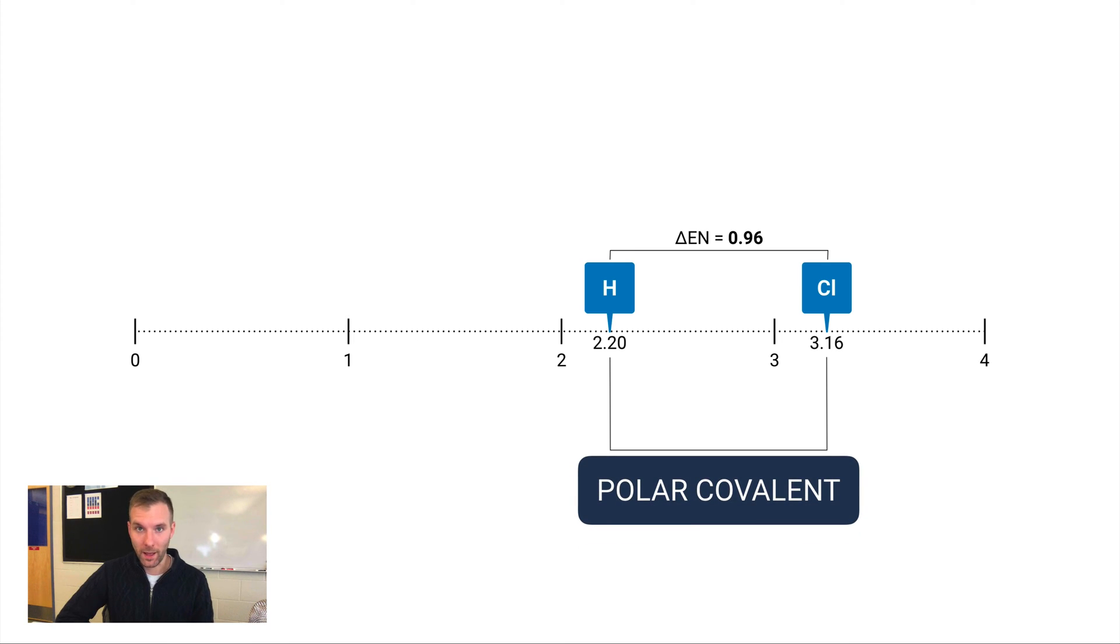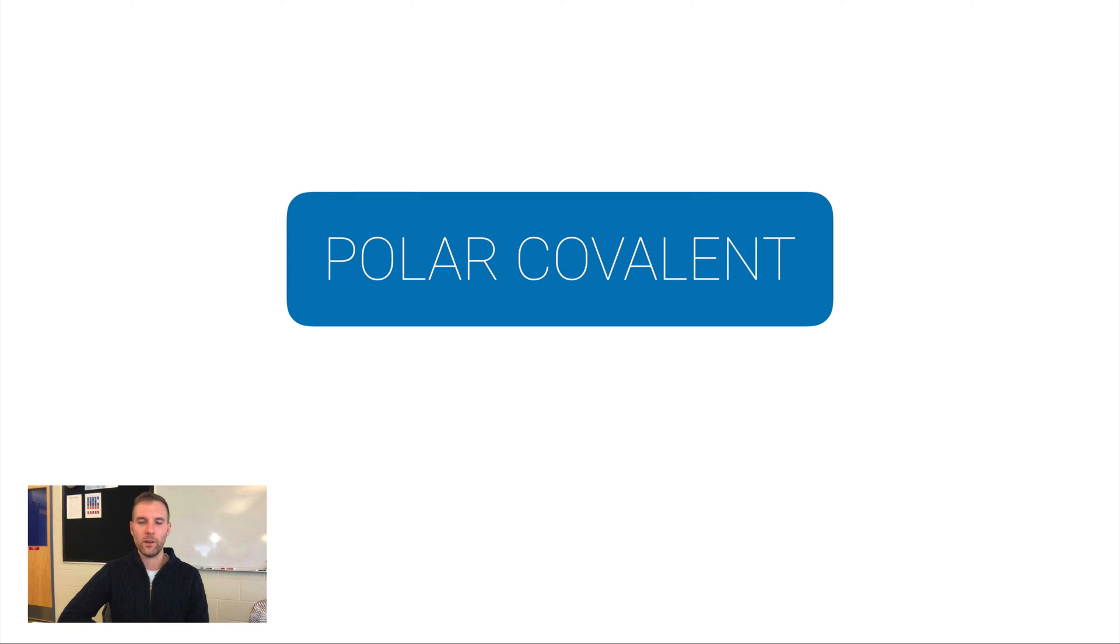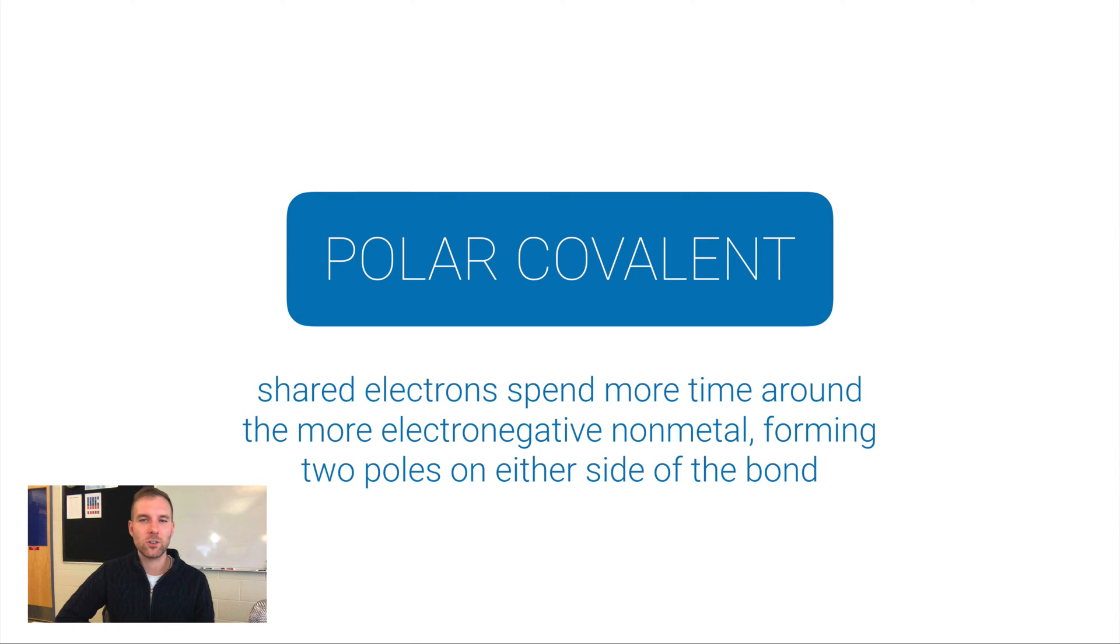Here's what's going on in polar covalent bonds: shared electrons between two atoms spend more time around the more electronegative non-metal. That is the side that has the higher electronegativity value, because that element really wants to have electrons compared to the other element. They both want electrons for sure—that's why they're forming a covalent bond—but one wants them a little bit more than the other.